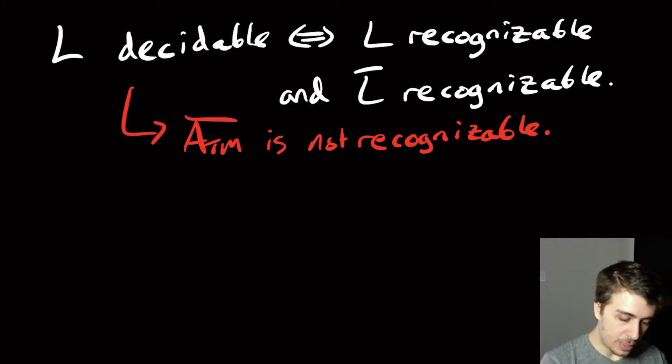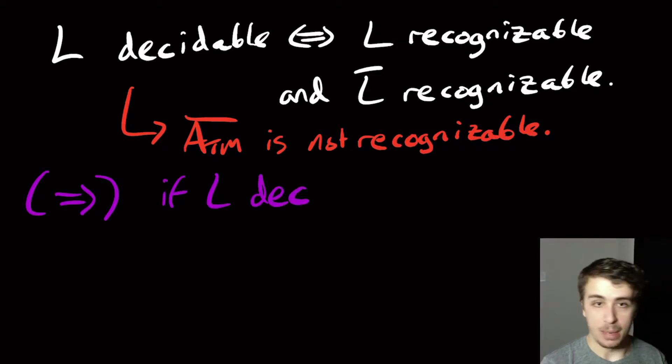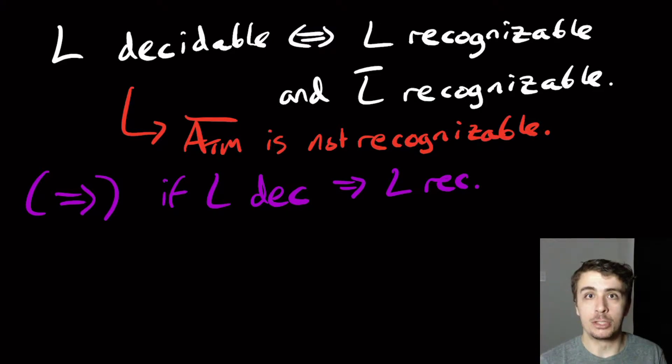So the easy direction is the forward direction. So that says if L is decidable, then L is recognizable. So if L is decidable, and I'm going to make a shorthand with DEC and REC, I don't want to write the whole word a bunch of times. If L is decidable, then by definition, it already is recognizable.